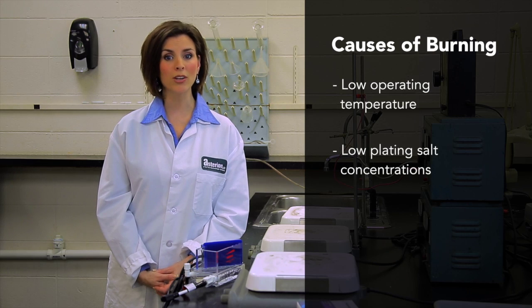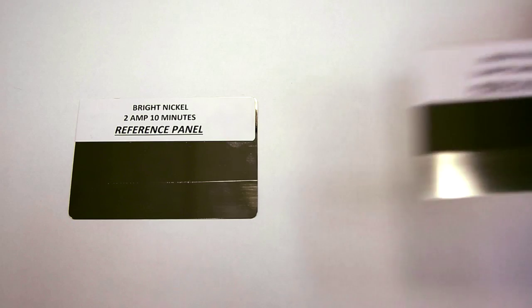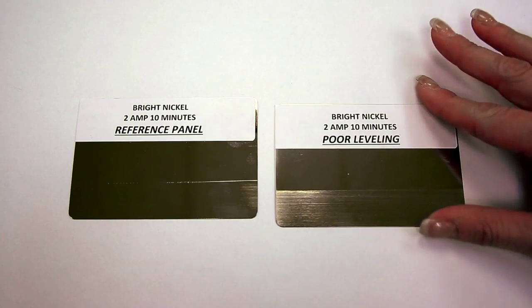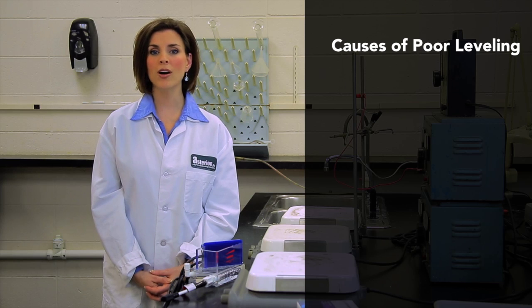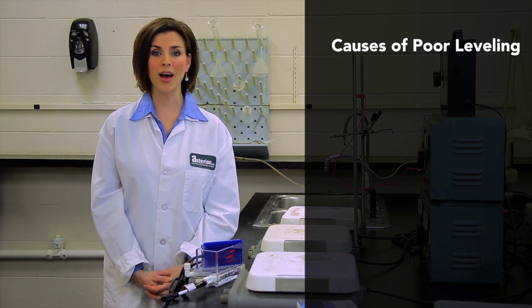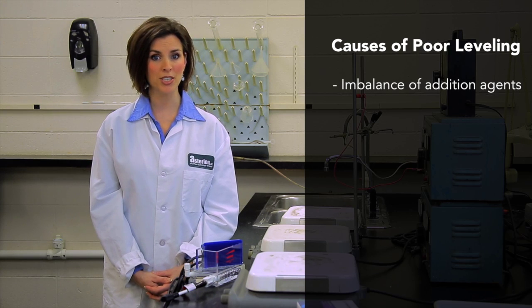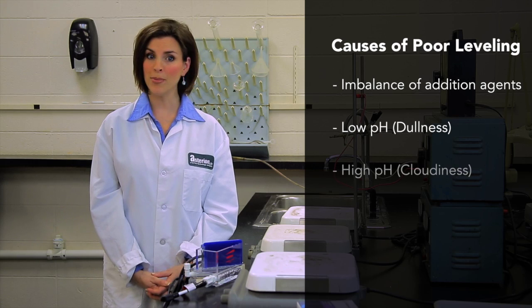This panel illustrates poor leveling. Notice the cloudy, dull area of the panel. The principal causes of poor leveling in a nickel plating bath are imbalance of addition agents, low pH causing dullness, high pH causing cloudiness, and improper temperature.